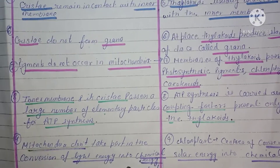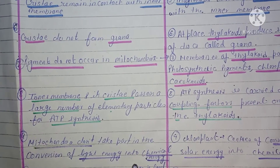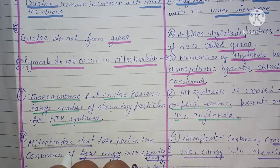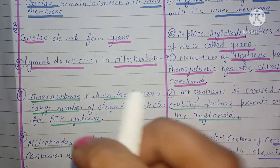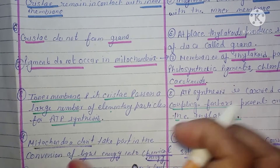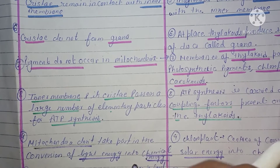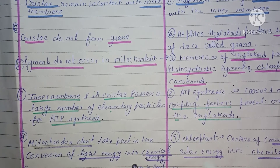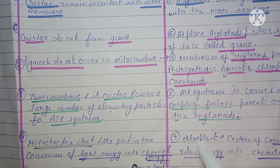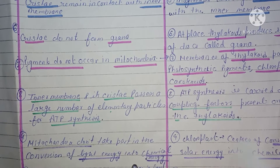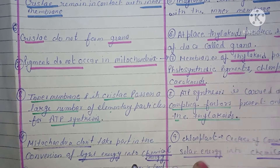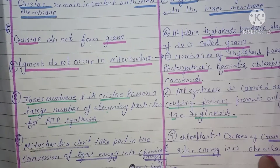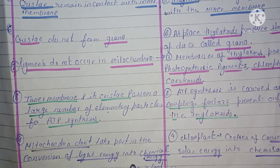Mitochondria light energy ko chemical energy mein convert nahi karta. Chloroplast solar energy ko chemical energy mein convert karta hai — that is the key energy conversion role of chloroplast.